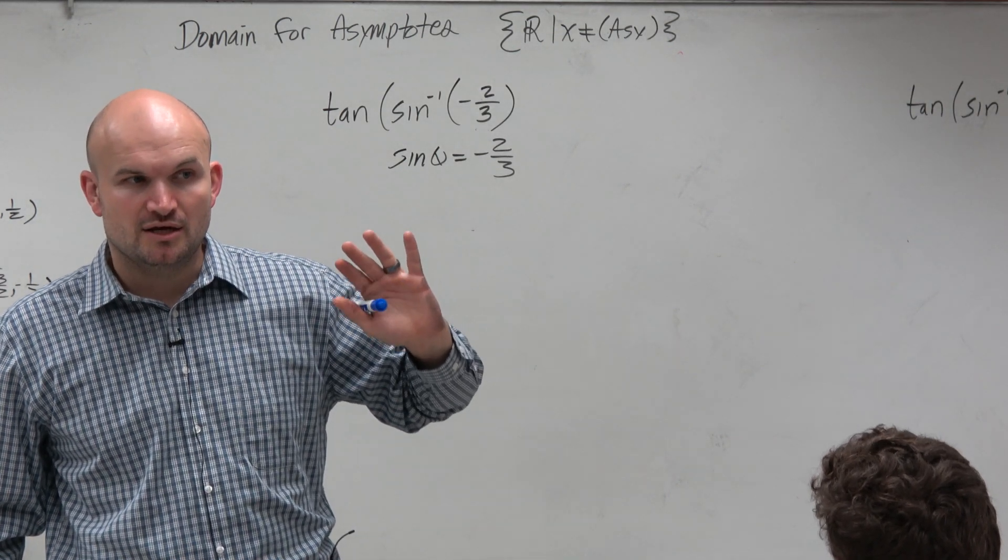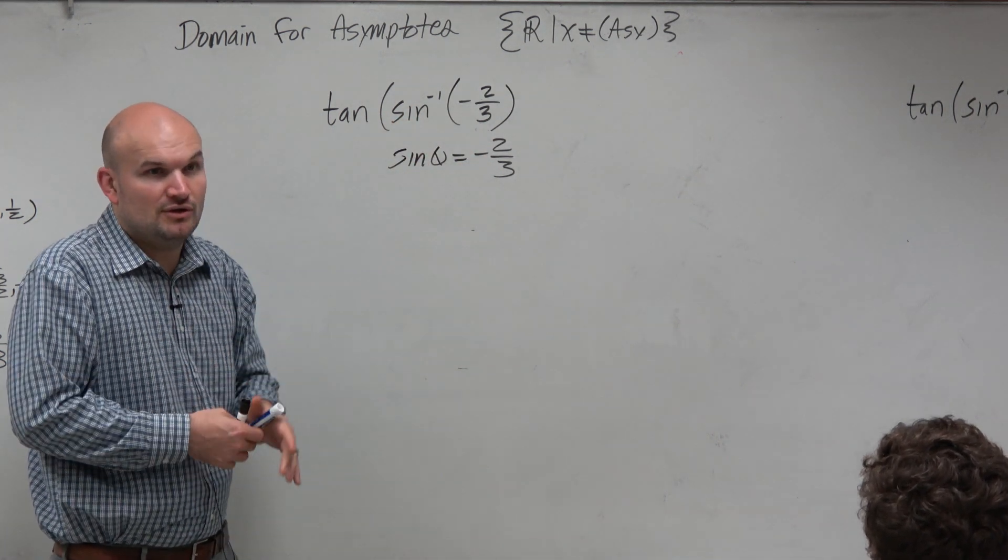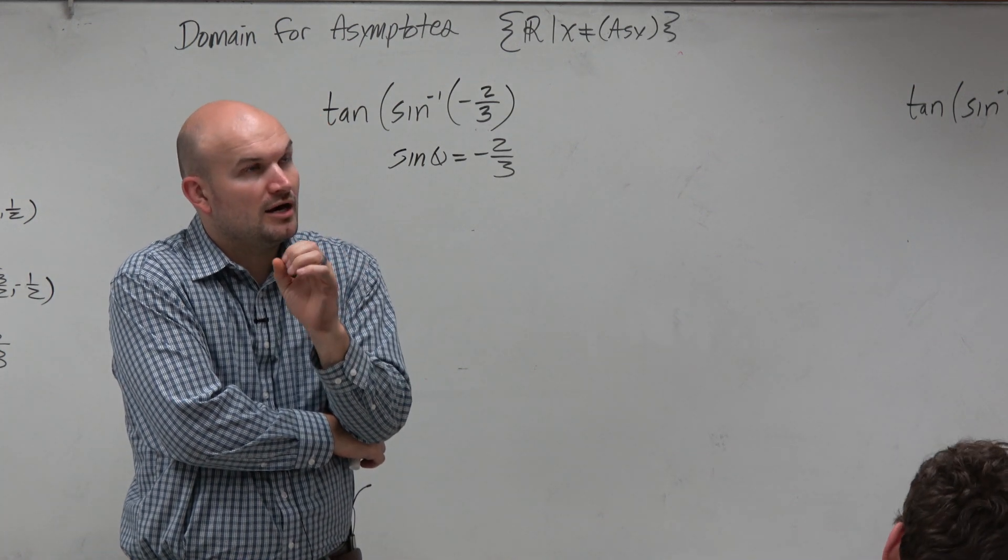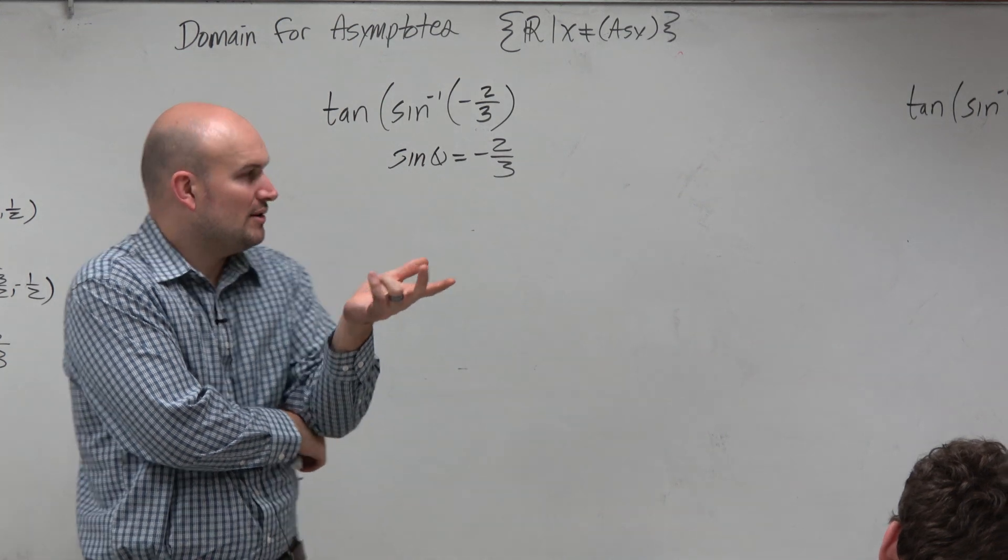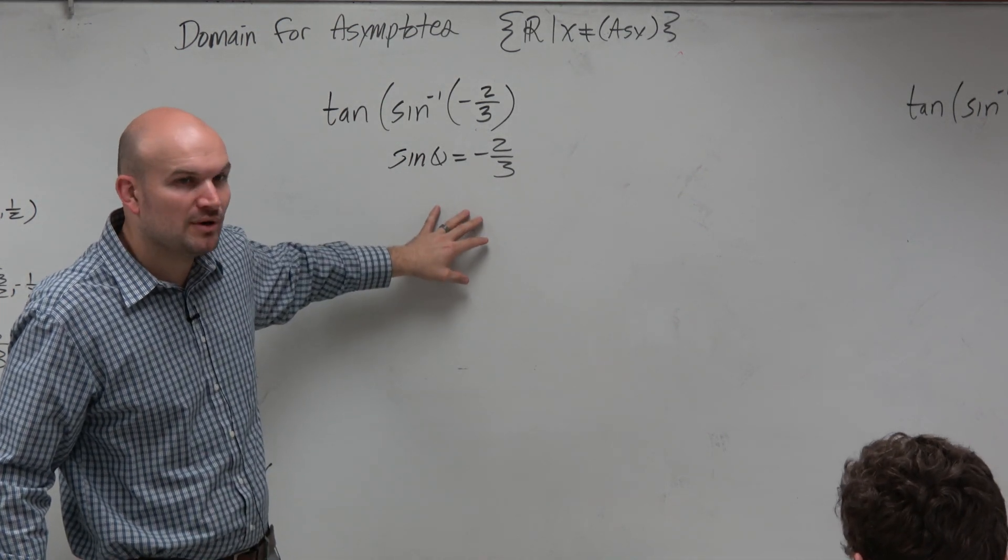That means, remember, we're trying to find the angle here, right? It's a sine inverse, so we're trying to find the angle. The only angles are in multiples of 30, 45, and 60 degrees. So if we don't have a point within the unit circle that we're aware of, it's not going to be one of those angles.